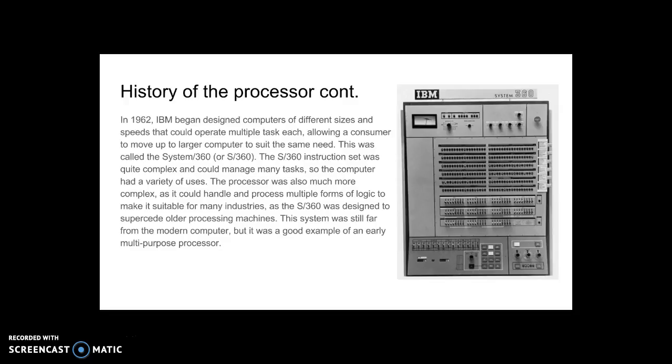In 1962, IBM began designing computers of different sizes and speeds that could operate multiple tasks each, allowing a consumer to move up to larger computers to suit the same need. This was called the System 360, or S360. The S360 instruction set was quite complex and could manage many tasks, so the computer had a variety of uses. The processor was also much more complex, as it could handle and process multiple forms of logic to make it suitable for many industries, as the S360 was designed to supersede older processing machines.